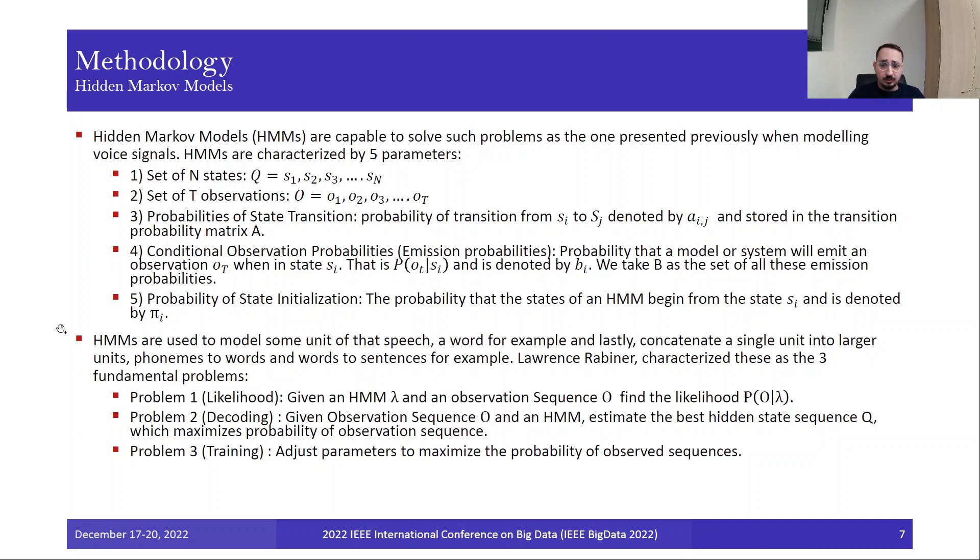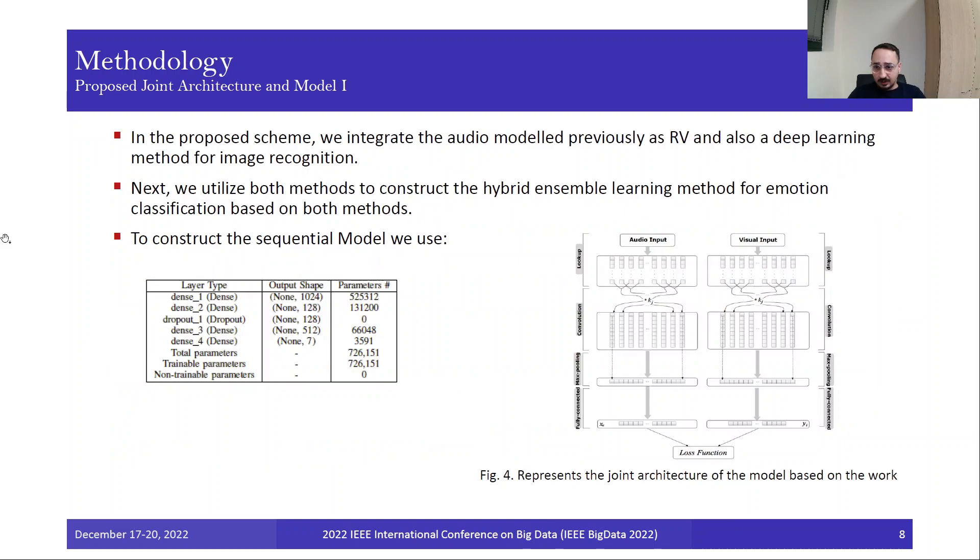We have the set of N states Q, the set of T observations O, the probabilities of state transition from S_i to S_j denoted by A_ij stored in transition probability matrix A, the conditional observation probabilities or emission probabilities, the probability that a model will emit observation O_T when in state S_i, and the probability of state initialization. HMMs are used to model some unit of speech, a word for example, and lastly concatenate a single unit into larger units: phonemes to words, words to sentences, and so on. Lawrence Rabiner characterized three fundamental problems in HMMs: Problem 1 is likelihood, given an HMM lambda and observation sequence O, find the likelihood P(O|lambda). Problem 2 is decoding, given observation sequence O and an HMM, estimate the best hidden state sequence Q that maximizes the probability of the observation sequence. And Problem 3 is training, adjust parameters to maximize the probability of observed sequences.